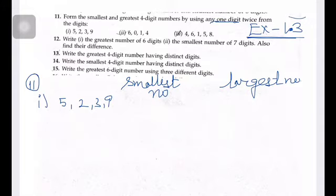For the smallest number, we should repeat the smallest digit. So it will be 2, 2. Then you can use the other numbers, which are 3 and 5. Then for the largest number, 9, 9, then the remaining numbers are 5 and 3. This will be your answer.